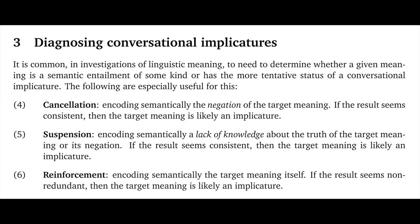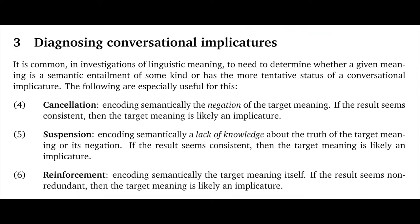The first test is the most blunt: cancellation. When a speaker cancels an implicature, they encode the negation of the target meaning semantically. Suspension is a weaker version of cancellation. This is where the speaker encodes semantically a lack of knowledge about the truth of the target meaning or its negation. Again, if the result seems consistent, then the target meaning is likely an implicature.